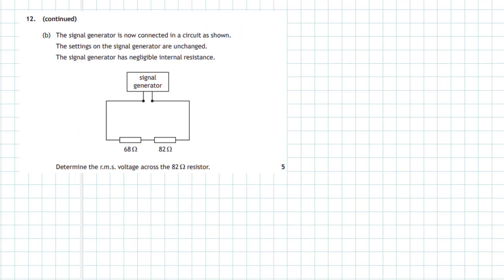Question 12 part (b). The signal generator is now connected in a circuit as shown. The settings on the signal generator are unchanged. The signal generator has negligible internal resistance, and what we've got to do is determine the RMS voltage across the 82 ohm resistor. Well, we know we have the peak voltage we worked out previously - peak voltage is 3 volts.